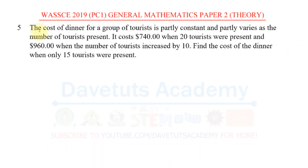In this question, we are told that the cost of dinner for a group of tourists is partly constant and partly varies as the number of tourists present. It costs $740 when 20 tourists were present and $960 when the number of tourists increased by 10. Note that it is increased by 10.